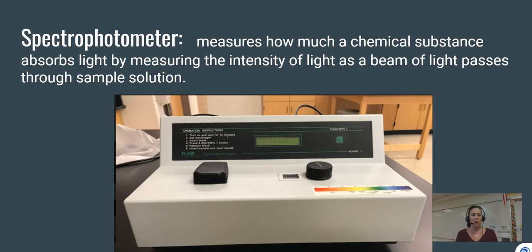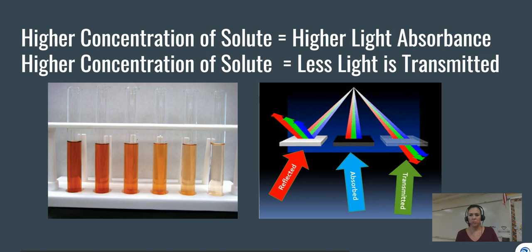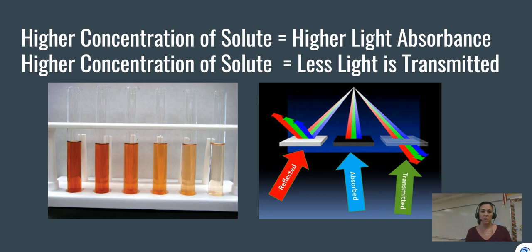A spectrophotometer measures how much a chemical substance absorbs light by measuring how much light passes through a sample. On the left are test tubes — some darker than others. The darkest brown tubes have a high concentration of solute, while the rightmost tube has the least. The spectrophotometer measures how much light passes through to determine how much is absorbed.